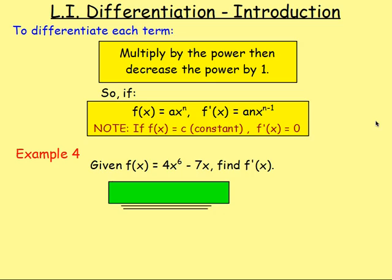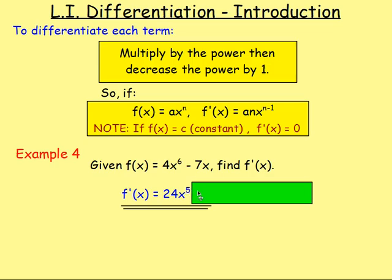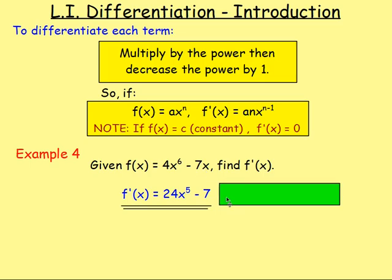Example 4: Given f(x) = 4x⁶ − 7x, find f'(x). Multiply by the power: 4 times 6 gives 24, and decrease the power by 1, giving x⁵. For −7x, that's 7x to the power of 1, so 1 times 7 gives 7, and x to the power of 0 is just 1, so it disappears leaving −7. Really, if you've got something times x, you just end up with that something. So minus 7x just becomes minus 7. The answer is f'(x) = 24x⁵ − 7.